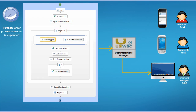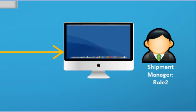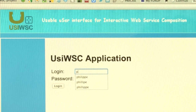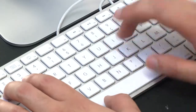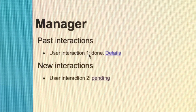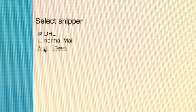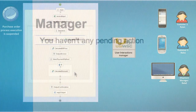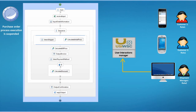For the next interaction, a user interface for the shipment manager is generated, adapted to the desktop device of the shipment manager. Through this user interface, the shipment manager can interact with the purchase order process by viewing the different interactions to perform and selecting a shipper. When the UI manager receives the selected shipper from the shipment manager, the execution of the process is resumed until the next interaction.